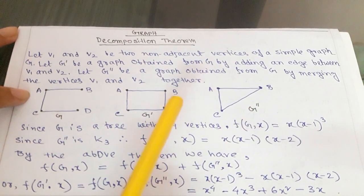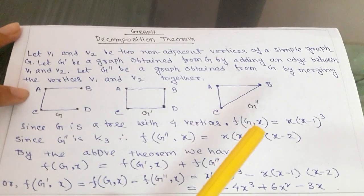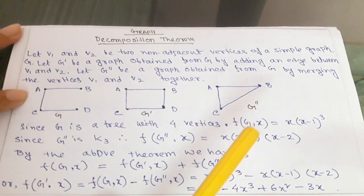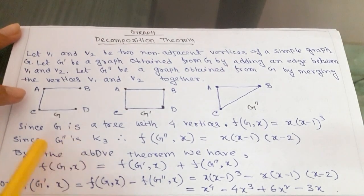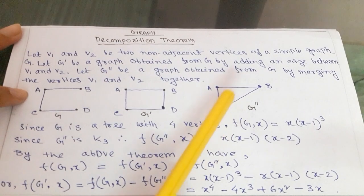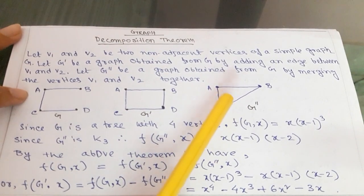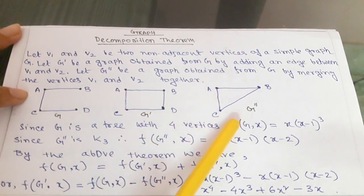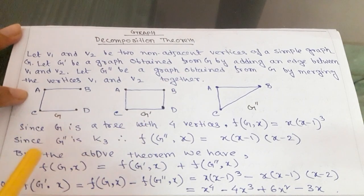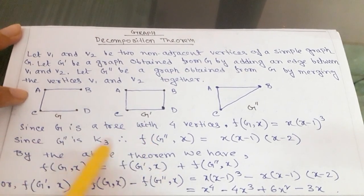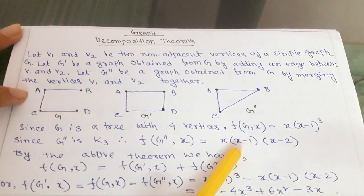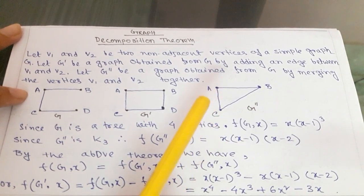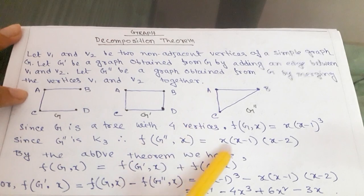You know the formula of chromatic polynomial. If you don't know, then you should see my chromatic polynomial video. For G double dash, the number of vertices is 3 and edges are 3, so we call this graph K3. The chromatic polynomial for K3 — since the number of colors is 3 — we will compute it accordingly.